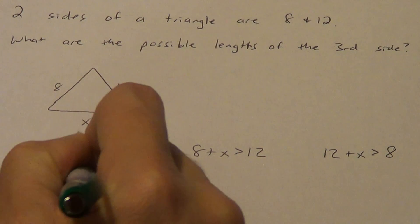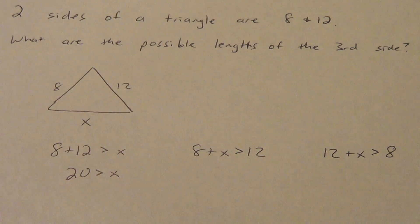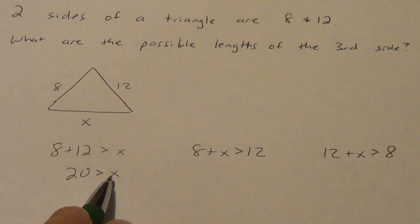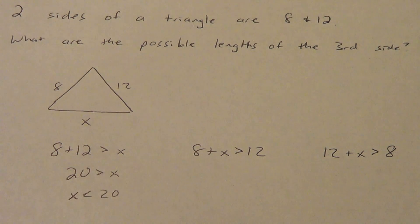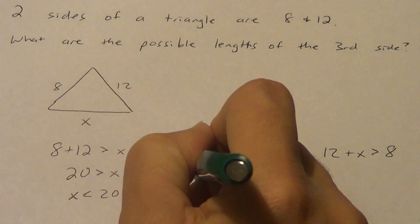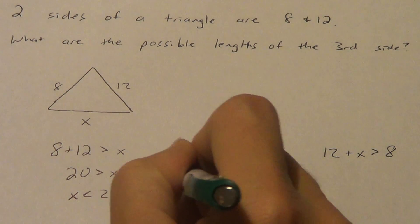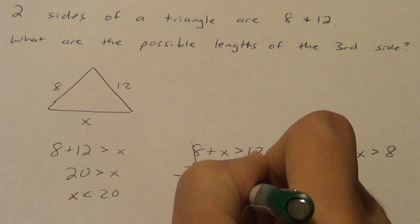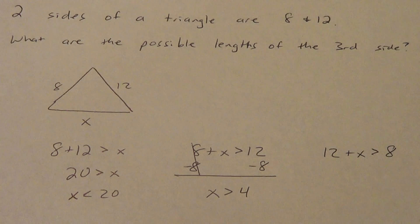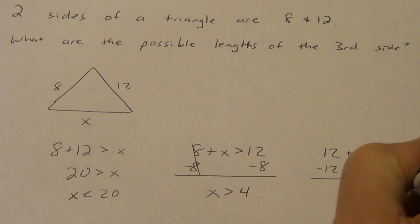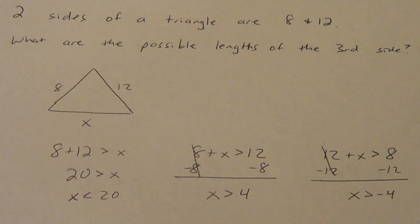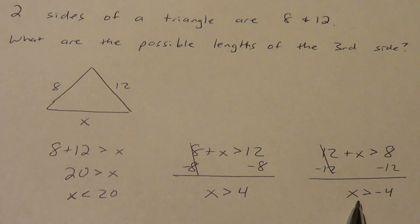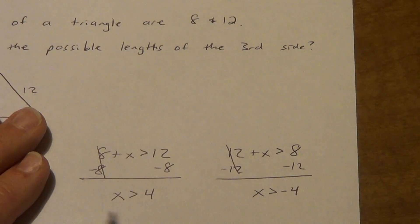8 plus 12 is 20, so 20 is greater than X. If we read this backwards, X is less than 20. Here, we subtract 8, and we get X is greater than 4. Over here, when we subtract 12, we get X is greater than negative 4. You're going to get two signs that are the same and one that's different. We don't have to worry about that one — we've got to think about the two greater thans.